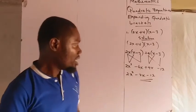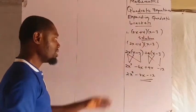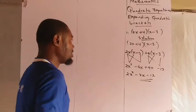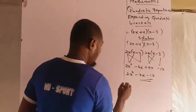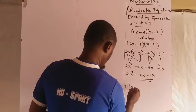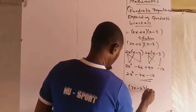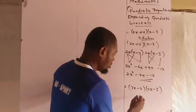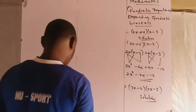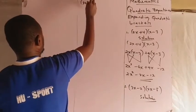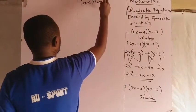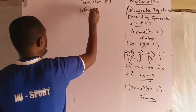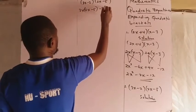That is the result and that is the expansion. Let's take another example. We have (3x − 2) into (2x − 5). The same method is used. Solution: you have 3x − 2 into 2x − 5. The first term in the multiplier multiplies all, so we have 3x into (2x − 5), then minus 2 into (2x − 5).